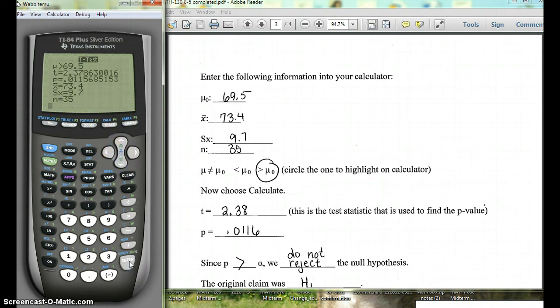And then we hit Calculate, and what we're really interested in is this third thing, our p-value, 0.0116, and we round to four decimal places. Now alpha was 1%, or 0.01. This is bigger than 0.01.